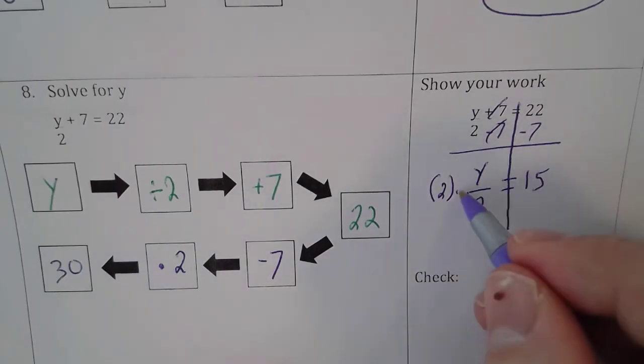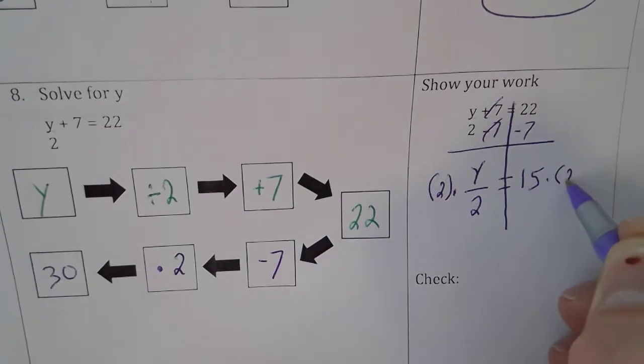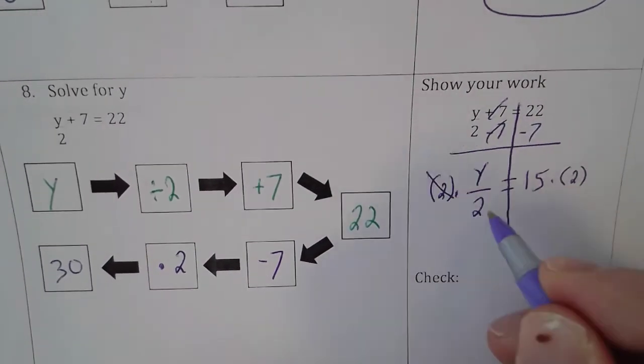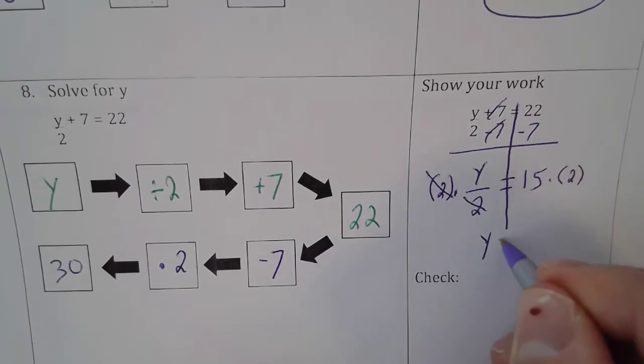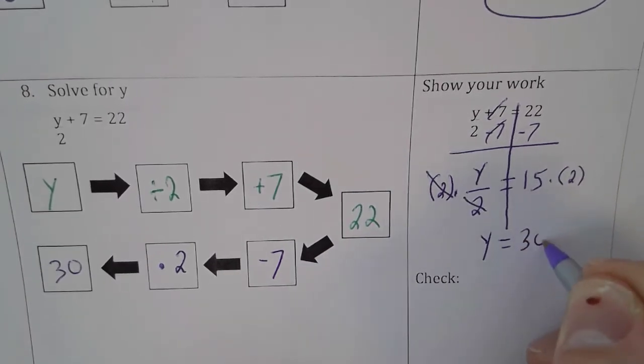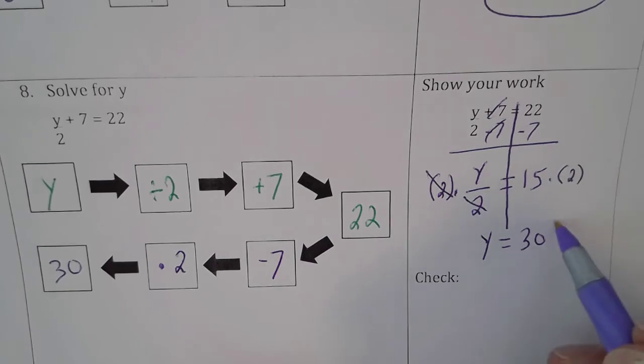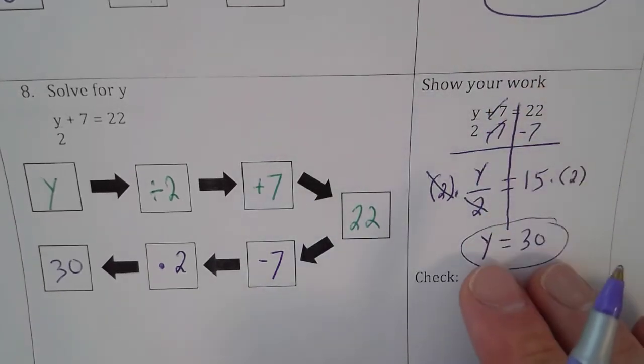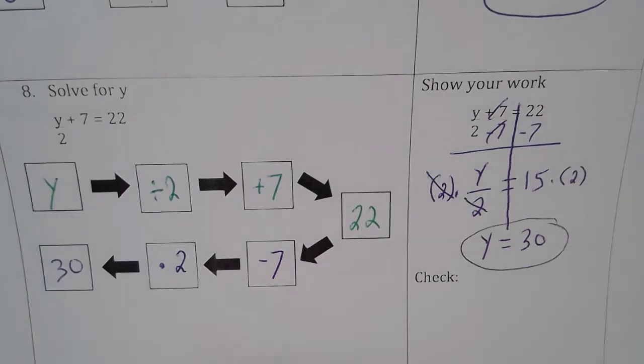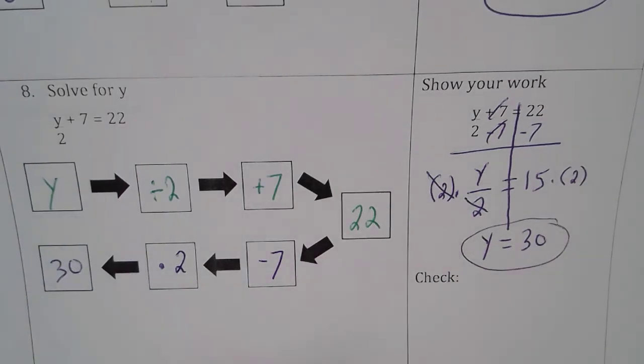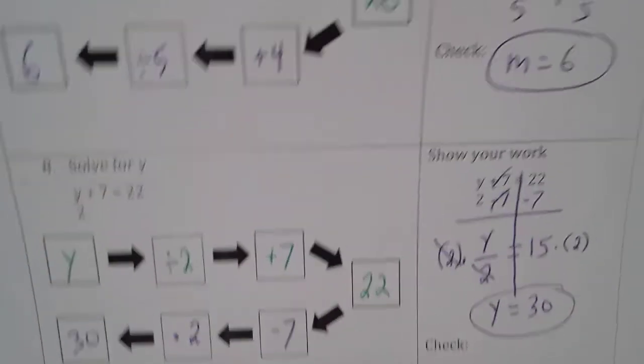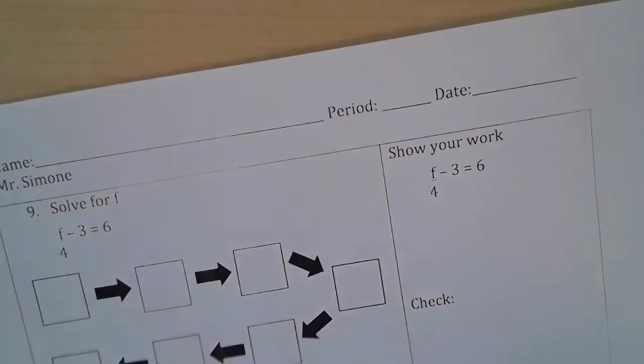Multiply by 2. Multiply by 2, divide by 2, you're left with just y. And y will equal 30, because 15 times 2 is 30. So this is how we show our work mathematically, and this is how we set up the values. We can always use a calculator to help us solve it.